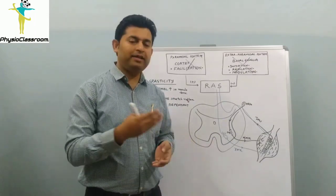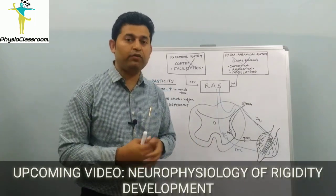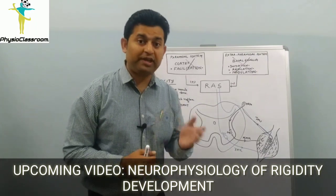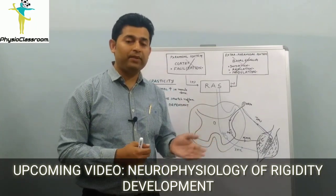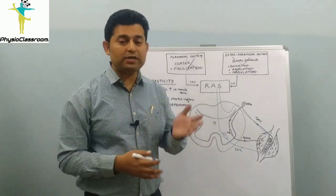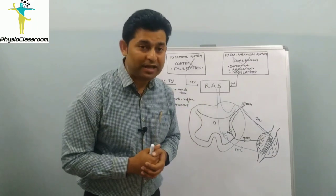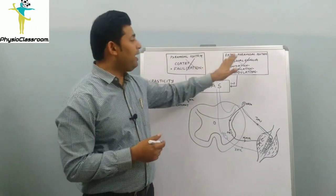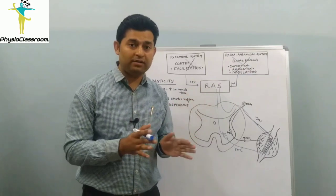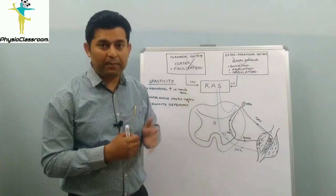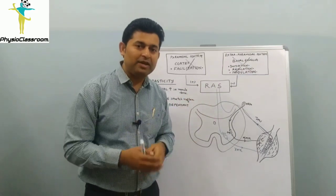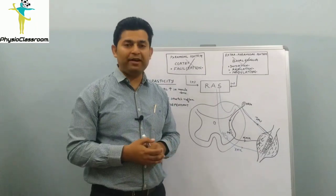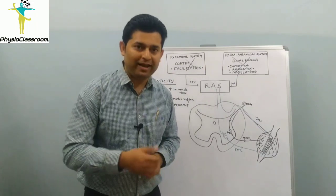I sincerely hope I was able to simplify the mechanism of spasticity development. In the next neurophysiology video we are going to talk about the mechanism of rigidity development, which is seen in upper motor neuron lesions where there is only pure extrapyramidal system dysfunction and the pyramidal system is intact. See you all in the next video — till then, keep learning, keep sharing, and stay connected.